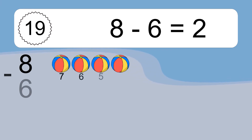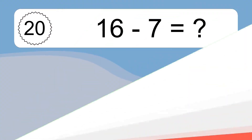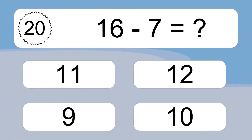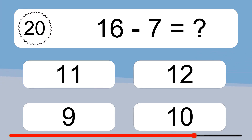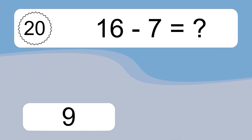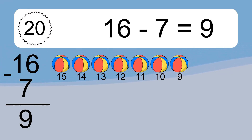8 minus 6 equals what? 8 minus 6 equals 2. Let's count it. 7, 6, 5, 4, 3, 2. 16 minus 7 equals what? 16 minus 7 equals 9. Let's count it. 15, 14, 13, 12, 11, 10, 9.